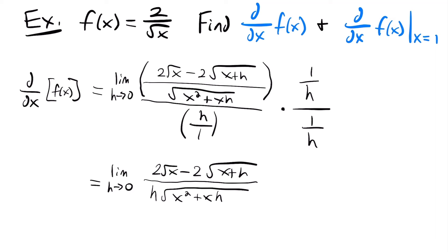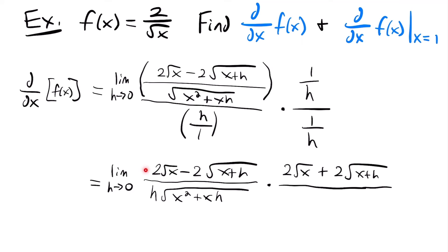We multiply by the conjugate of the numerator: [2√x + 2√(x+h)] over [2√x + 2√(x+h)]. The conjugate is just the same expression with the opposite sign. This needs to be a form of 1, so we put the same thing in the denominator.